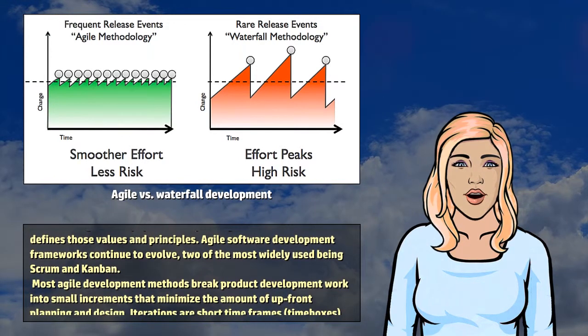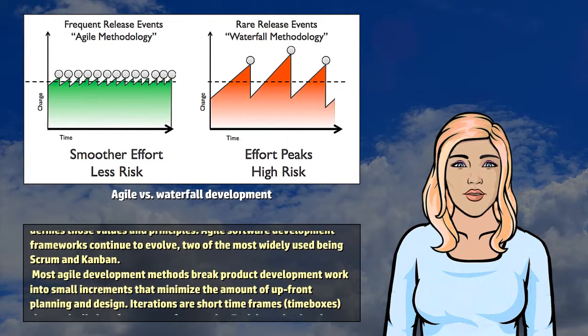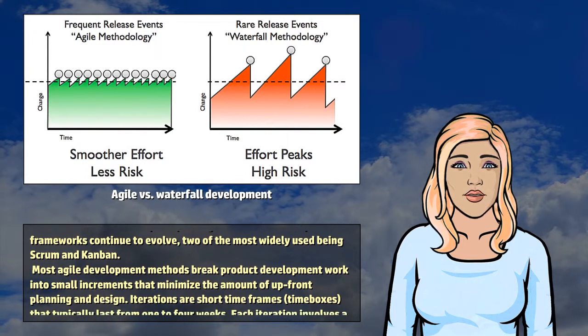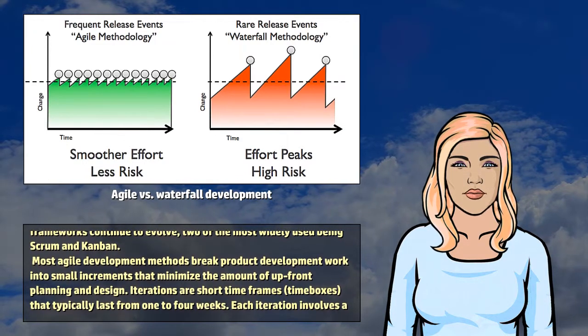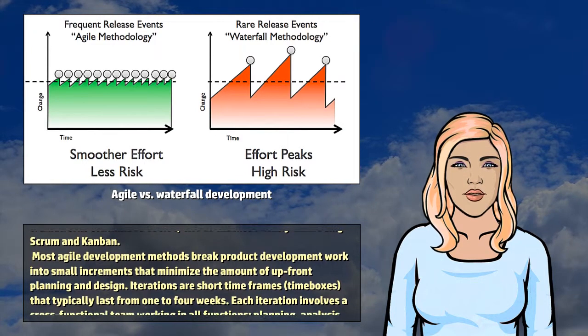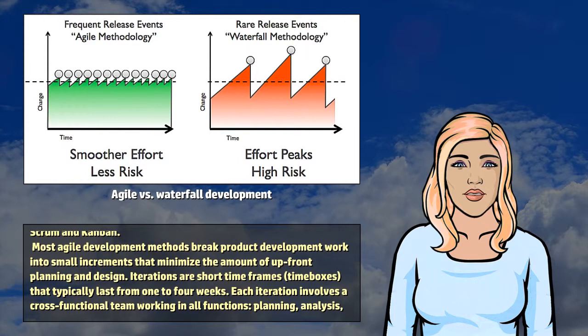Most Agile development methods break product development work into small increments that minimize the amount of upfront planning and design. Iterations are short timeframes, or time boxes, that typically last from one to four weeks.